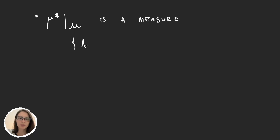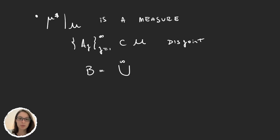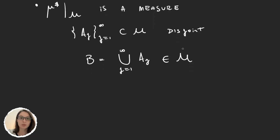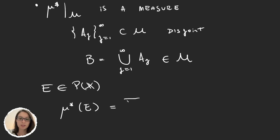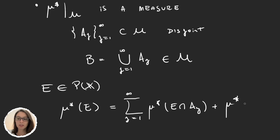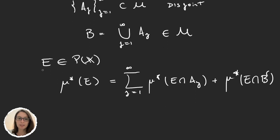We have a sequence A_j of sets in the sigma algebra, disjoint, and we call B the union up to infinity. We know, because of all the things we proved in the last video, that B is an element in the sigma algebra. The calculation we made was: for some set E in the power set of X, μ* of E equals the sum from j=1 to infinity of μ* of E ∩ A_j, plus the measure of E ∩ B complement. This is valid for any set E in the power set of X.